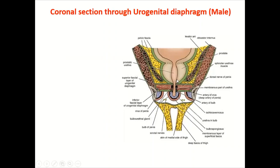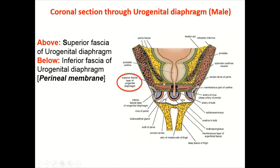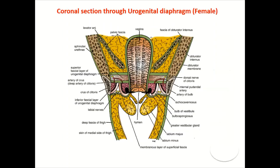Now the deep perineal pouch: in coronal section we can see the bladder, urethra, and ischial tuberosities on the side walls. Above the pouch is the superior fascia of the urogenital diaphragm; below it is the inferior fascia of the urogenital diaphragm, also called the perineal membrane.